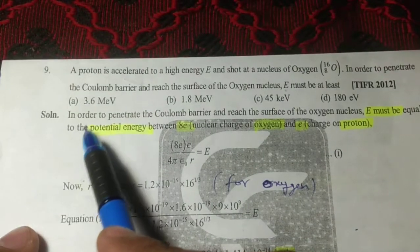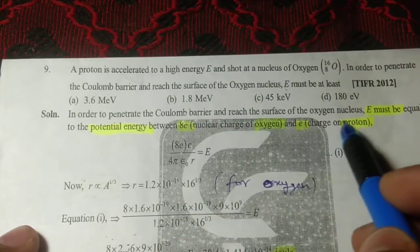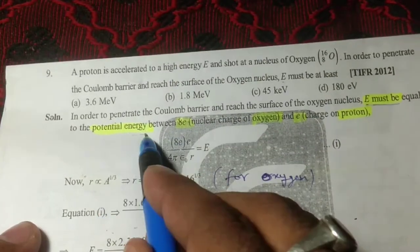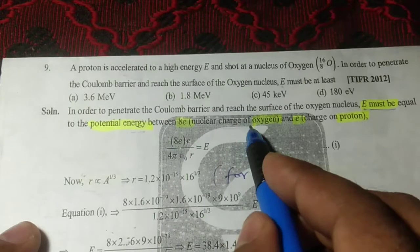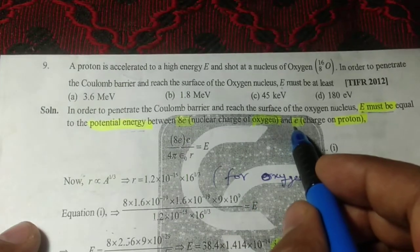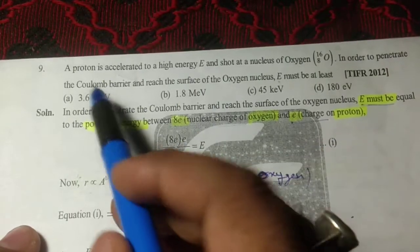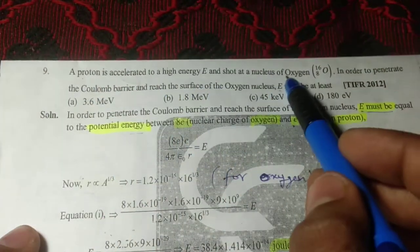In order to penetrate the Coulomb barrier and reach the surface of the oxygen nucleus, E must be equal to the potential energy between the oxygen nucleus and the charge on the proton. This is the proton and this is the oxygen.